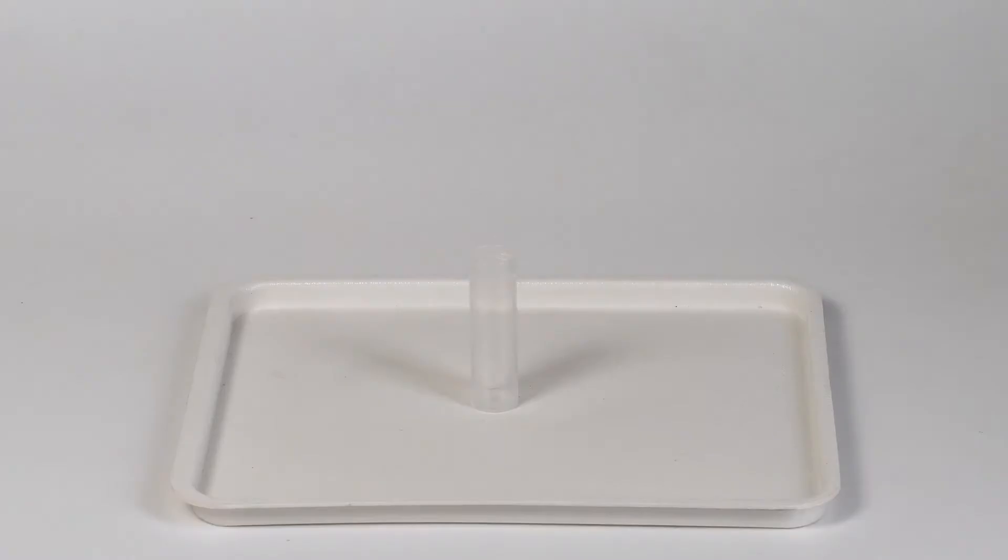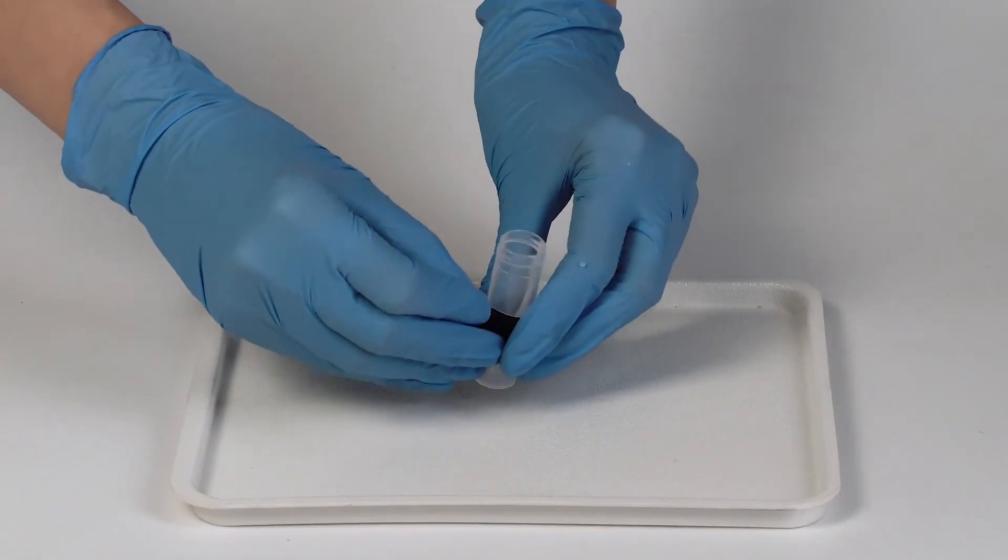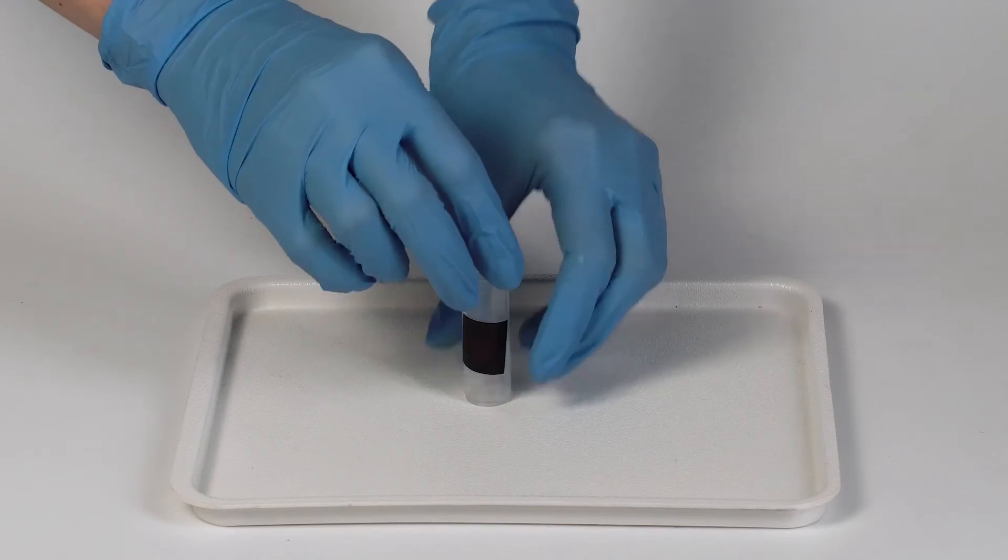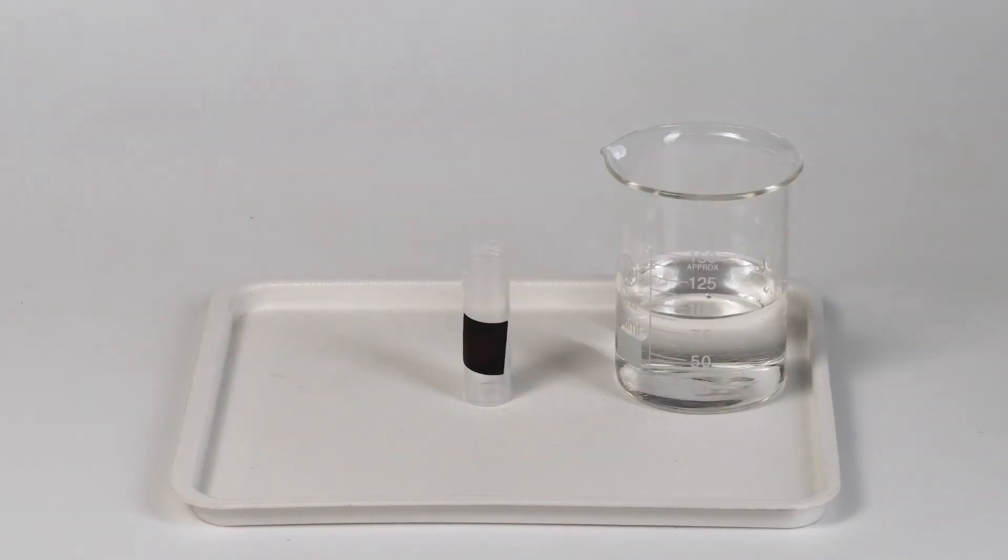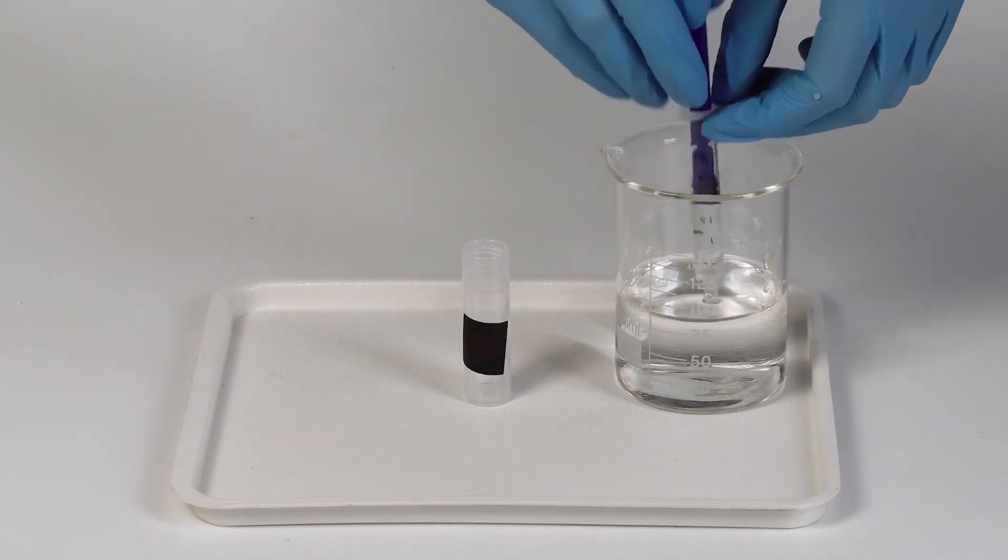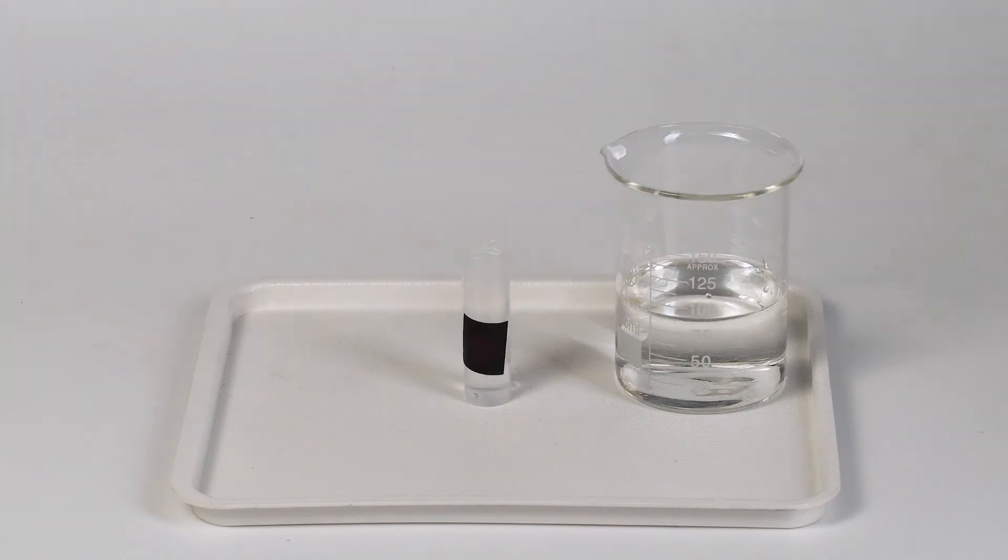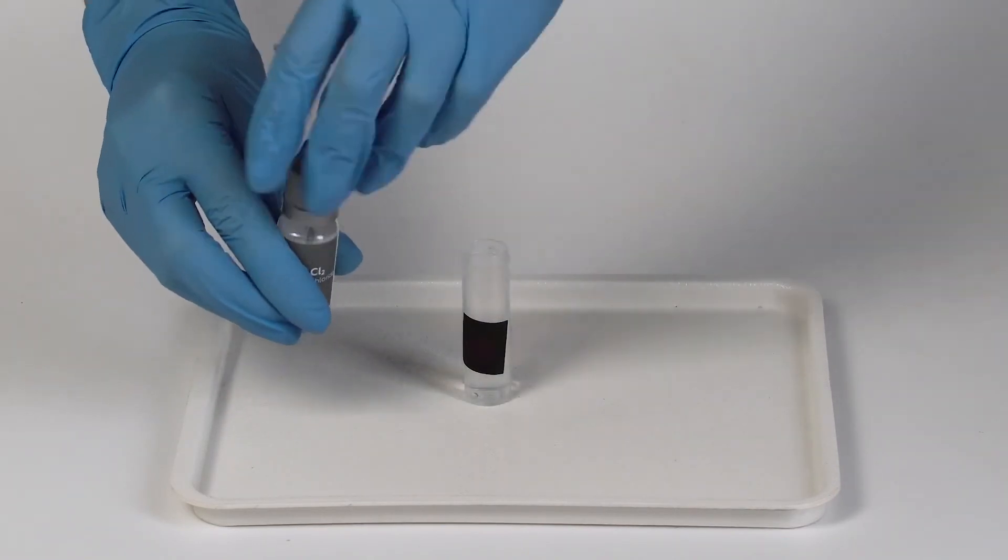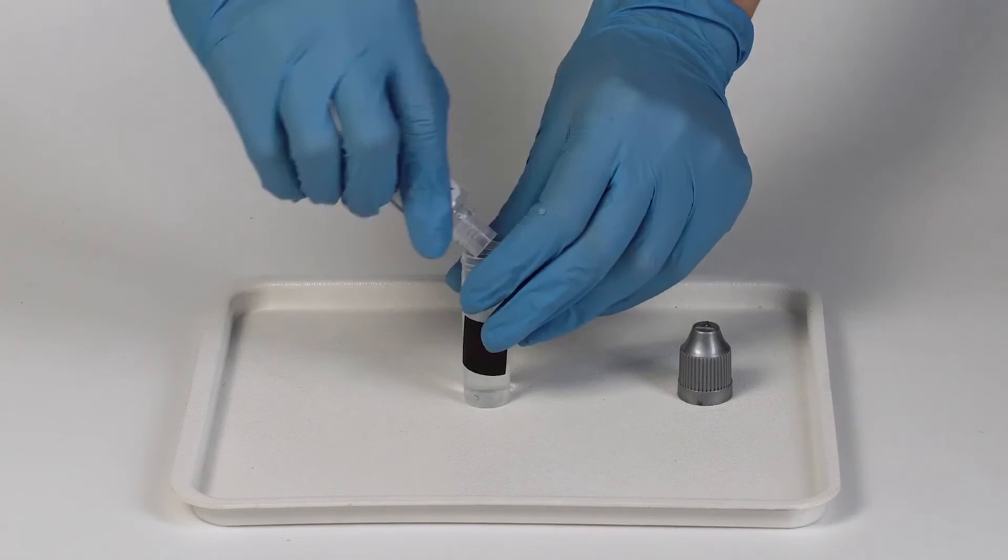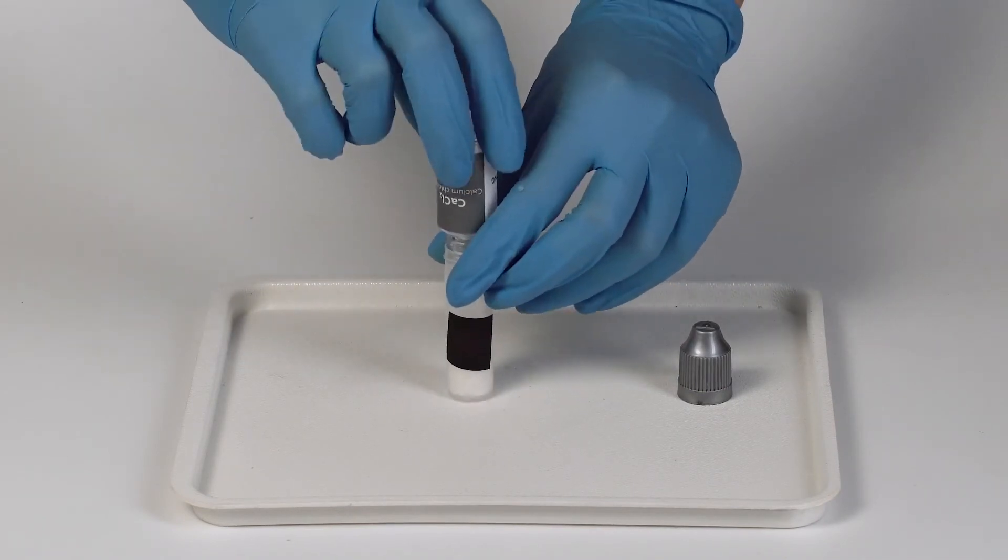Now take a plastic vial and attach a square thermosticker onto it. Using the syringe, add two milliliters of water to the vial and pour all of the calcium chloride from the second bottle into it.